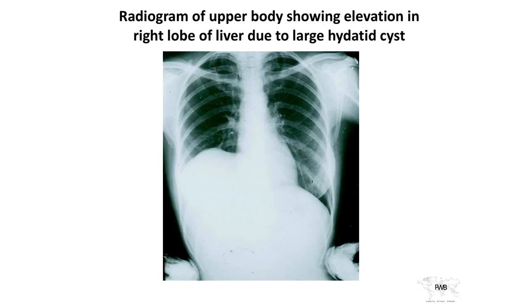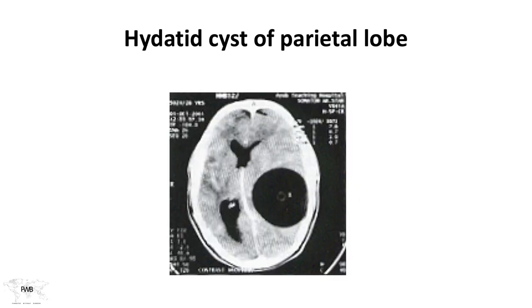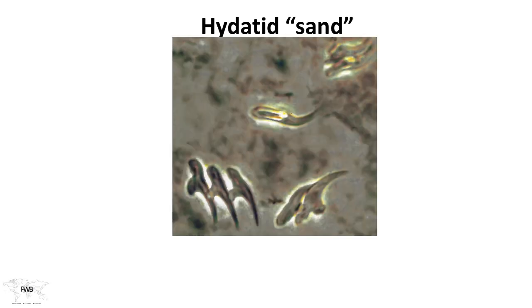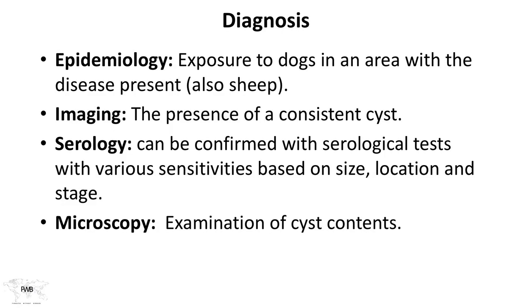A radiogram of the upper body shows diaphragm elevation on the right. Also shown is a hydatid cyst in the brain itself, and hydatid sand — what you might find in the contents of one of these cysts if you drain it. For diagnosis, think about epidemiology: is there exposure to dogs, is this an area with sheep and the dog-sheep cycle? What about imaging — is there a consistent cyst? Serology might be employed, though sensitivities vary based on size, location, and stage. A single early cyst might give a negative serological test that becomes positive later. Microscopy can also examine the cyst contents.